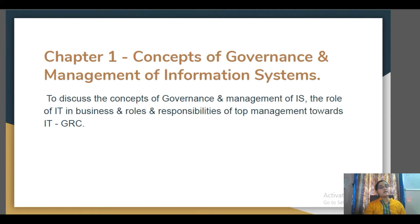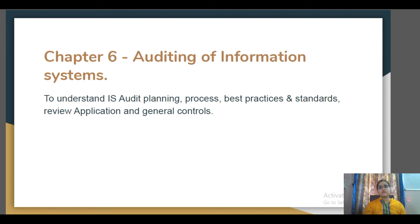What are the roles and responsibilities of the management, what is the concept of governance for the company, and how does IT play an important role in the business — all of this we'll be seeing in this chapter. Then comes Chapter 6: Auditing of Information System. Auditing is done because we need external compliance and external confirmation.